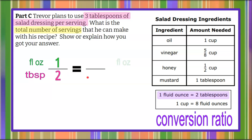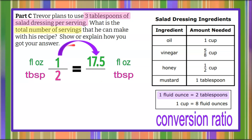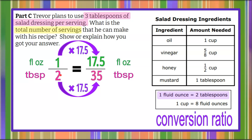We complete our proportion with an equivalent ratio of fluid ounces to tablespoons. From Part B we know the total recipe is 17 and a half fluid ounces, and we want to know how many tablespoons that is. One multiplied by 17 and a half gives 17 and a half, so two multiplied by 17 and a half completes our proportion. Two times 17 is 34, two times a half is 1, so 34 plus 1 equals 35 — the recipe makes 35 tablespoons total.